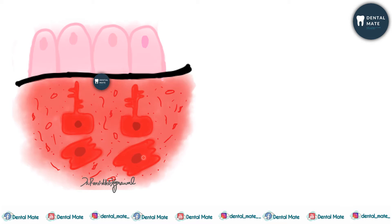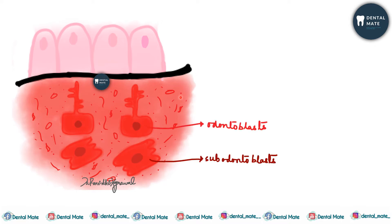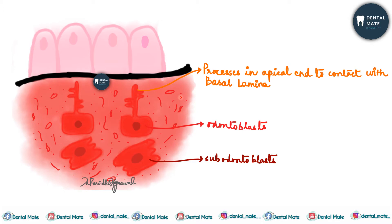These columnar odontoblast cells have processes in the apical end to contact with the basal lamina. These are the sub-odontoblastic cells. Looking at the dimensions: odontoblasts are approximately 7 micrometers in width and 40 micrometers in length.